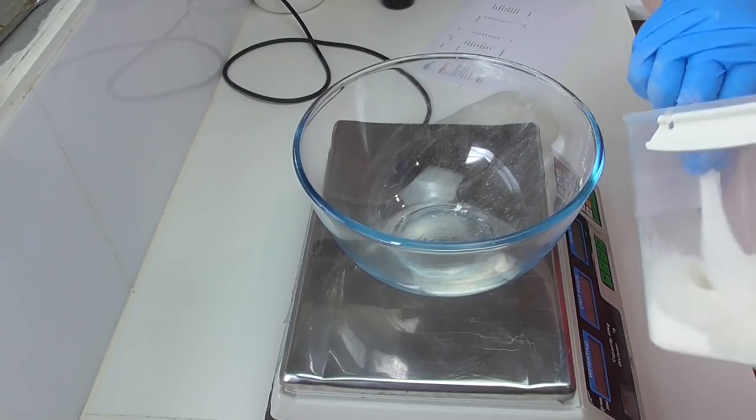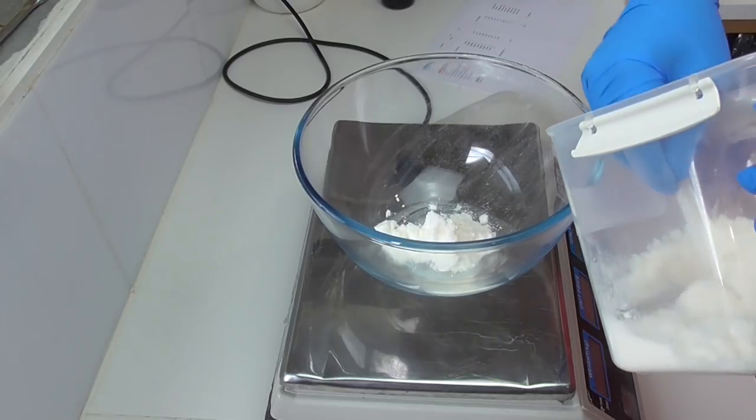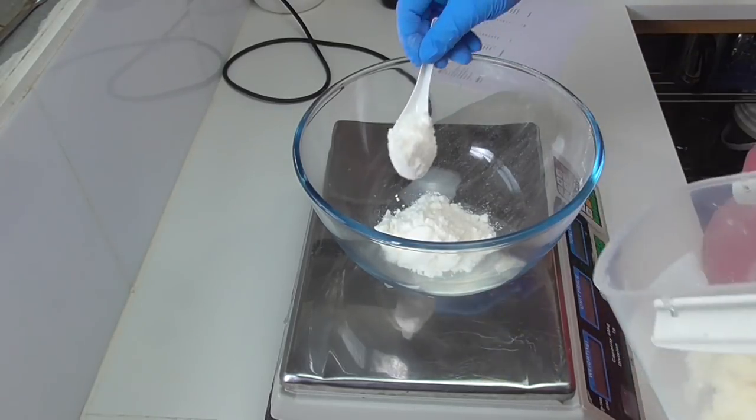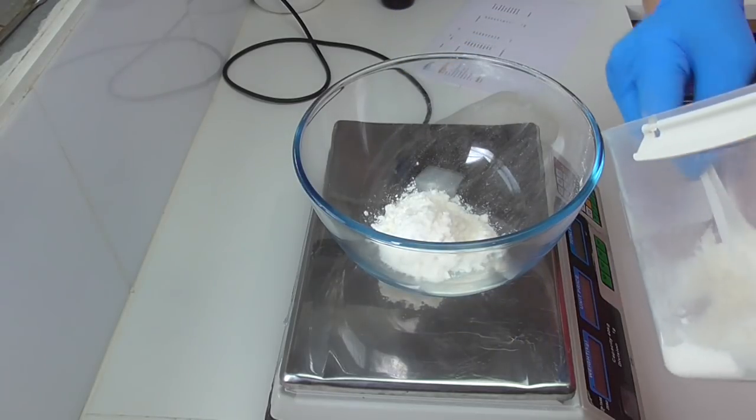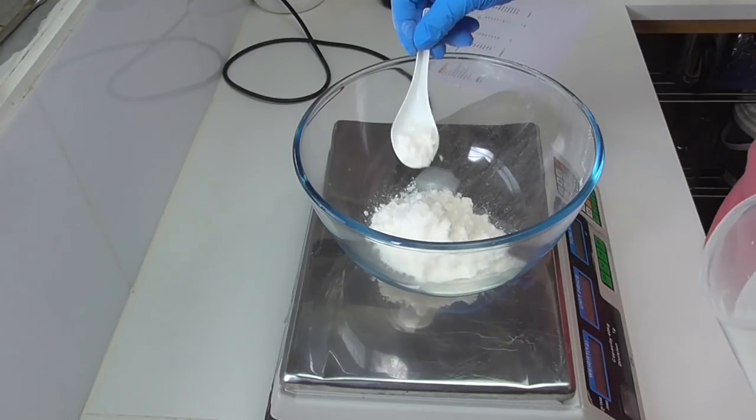First thing I'm going to add into my bowl here is a little bit of natrasorb, which is a modified tapioca starch. It's really good at holding wet liquids, keeping them nice and dry. The reason that I want them to stay dry is so I don't end up with a really wet mess in the bottom of the containers. I want it to stay a really nice dry powder.